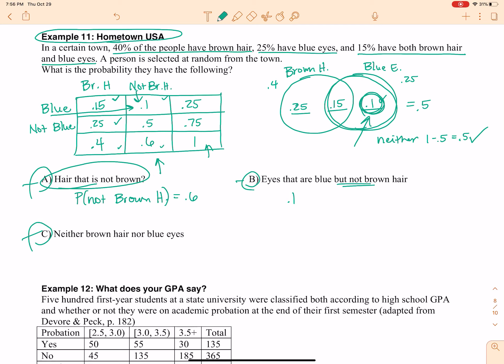All right, C, neither brown hair nor blue eyes. So the probability of neither one of them is going to be 0.5. If you'll notice, we already found that from our Venn diagram. But then over here in the table, not brown, not blue, right there. So for a problem like this, you can use a table or a Venn diagram. Sometimes building a table can be a little challenging, but once you have it, it's really easier to use a table to answer the questions. So hopefully that gives you a good foundation to move forward with your homework.